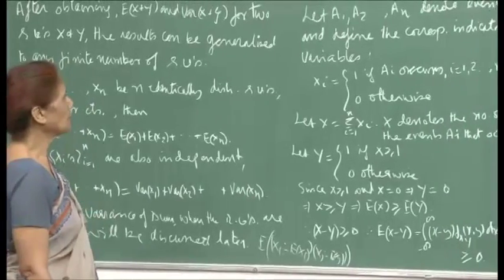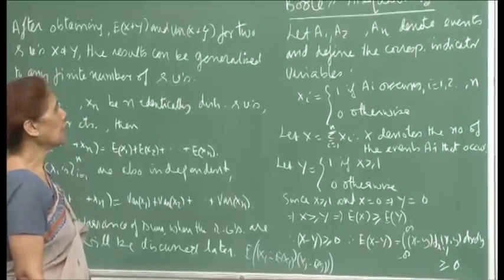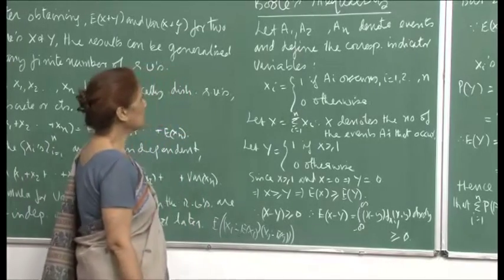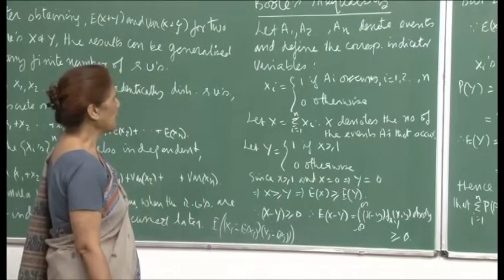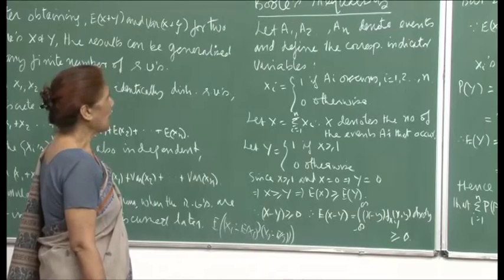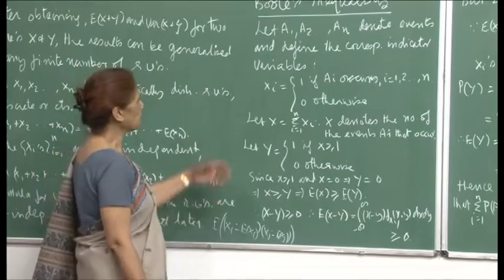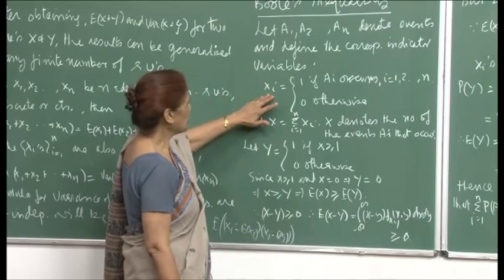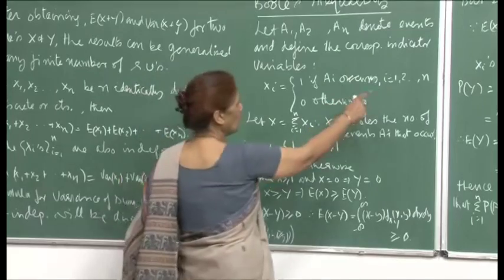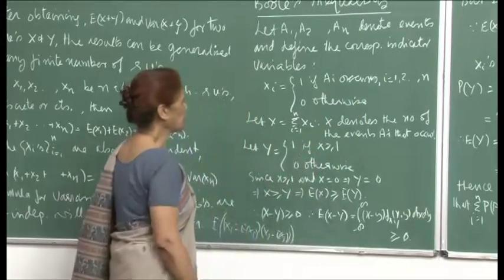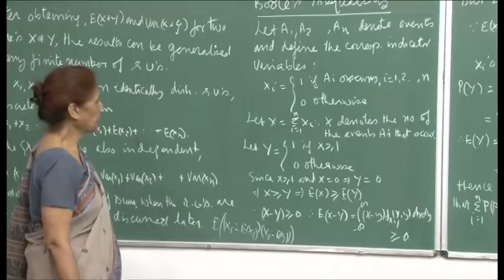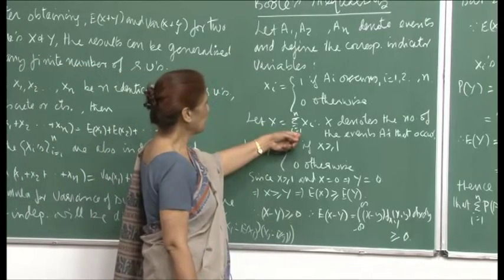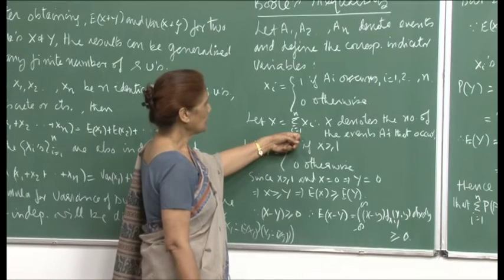Now let me discuss an interesting result called Boole's inequality. If you have A1, A2, ..., An as n events, and corresponding to these events I define the indicator variable Xi = 1 if Ai occurs (for i from 1 to n), and 0 otherwise. I let X be the sum of these n indicator variables.